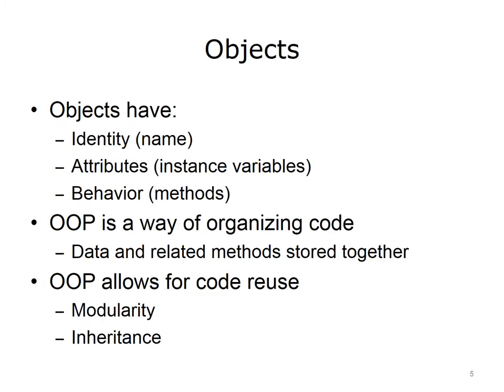Objects in programming are similar to objects in our natural world. Objects have an identity — they are all called something, like chair or desk, so that people can refer to them. Similarly, each object in a computer program has a name corresponding to a unique memory location where the object is stored. Natural objects have attributes; for example, a chair has attributes like height, color and position.